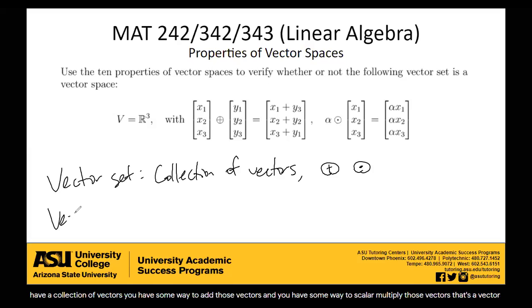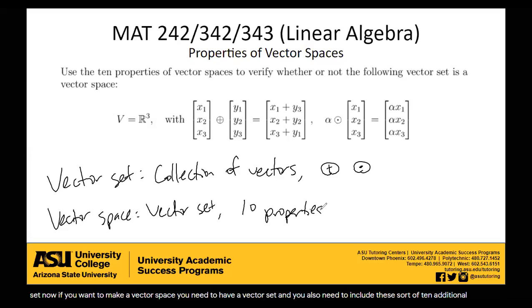Now, if you want to make a vector space, you need to have a vector set, and you also need to include these 10 additional properties. A vector set might satisfy a couple of the vector properties, but if you want to be a full-on vector space, you have to satisfy all 10 of the vector properties.